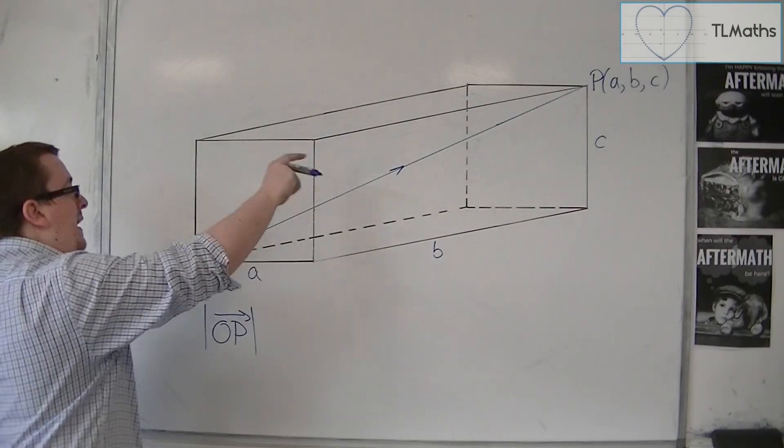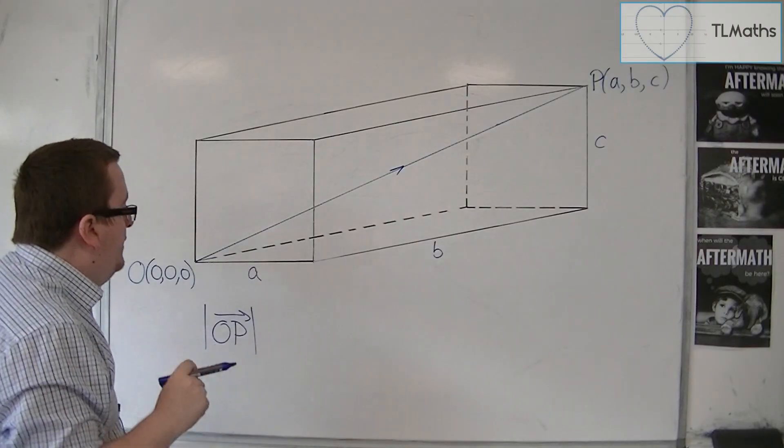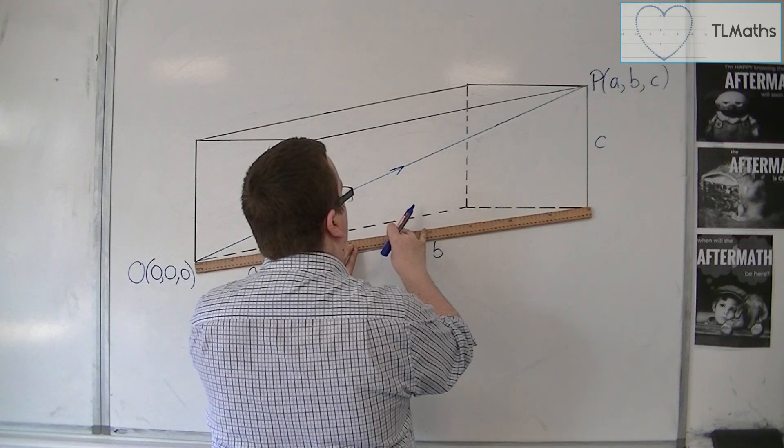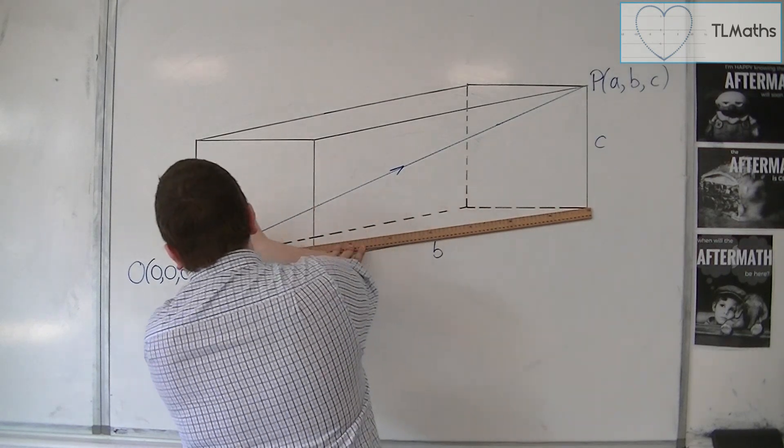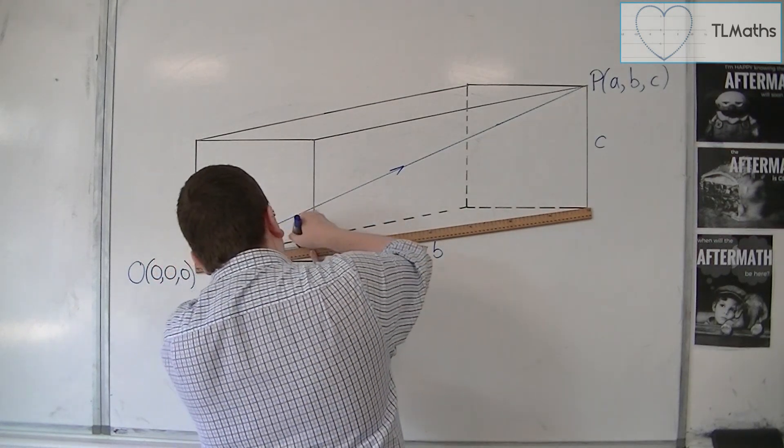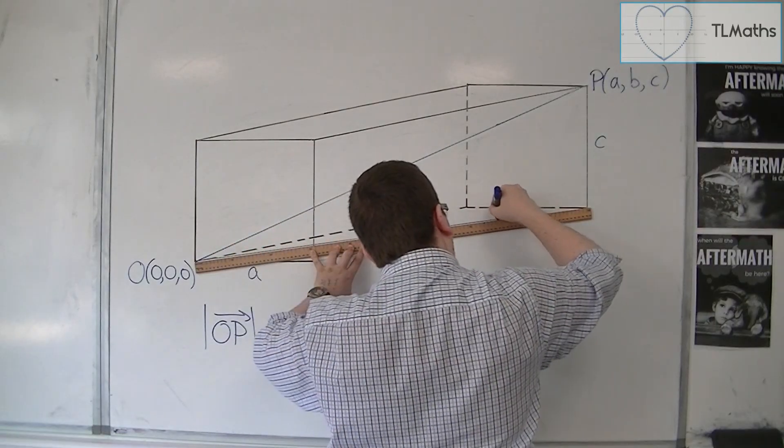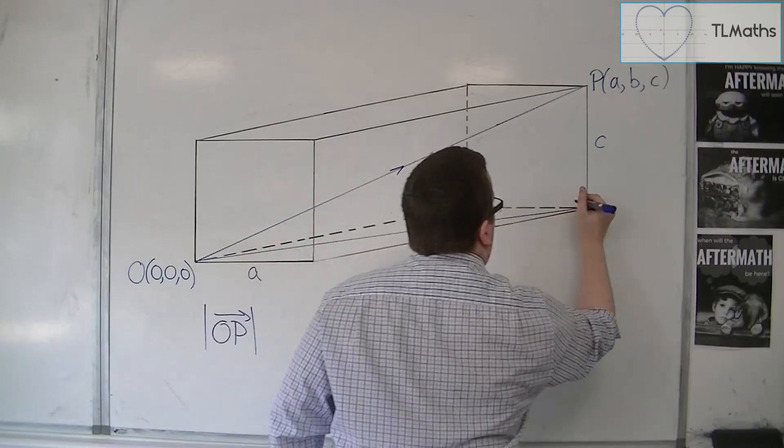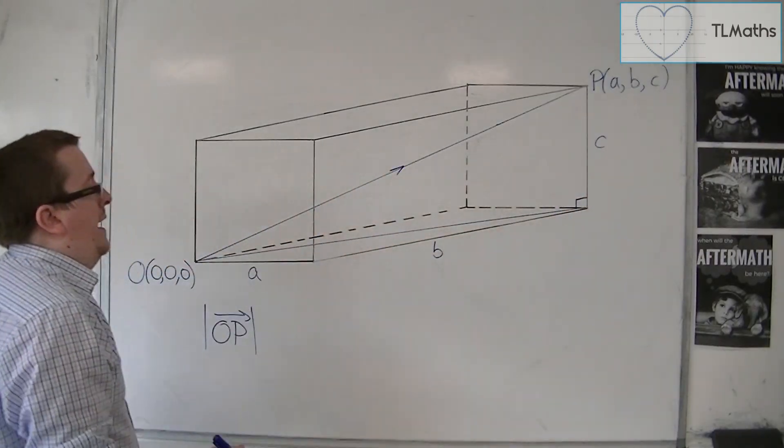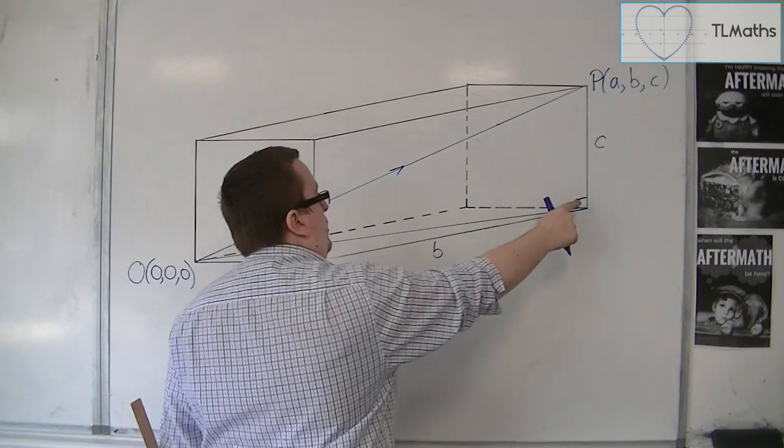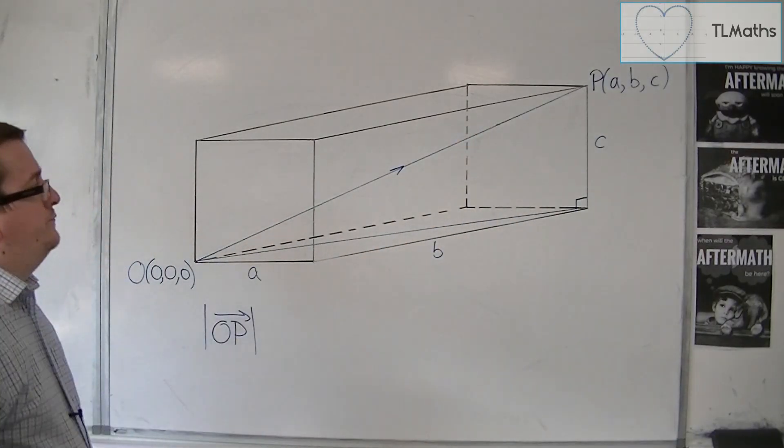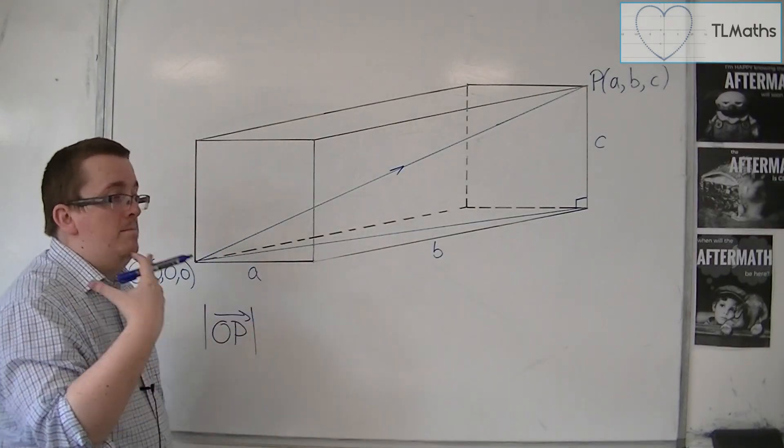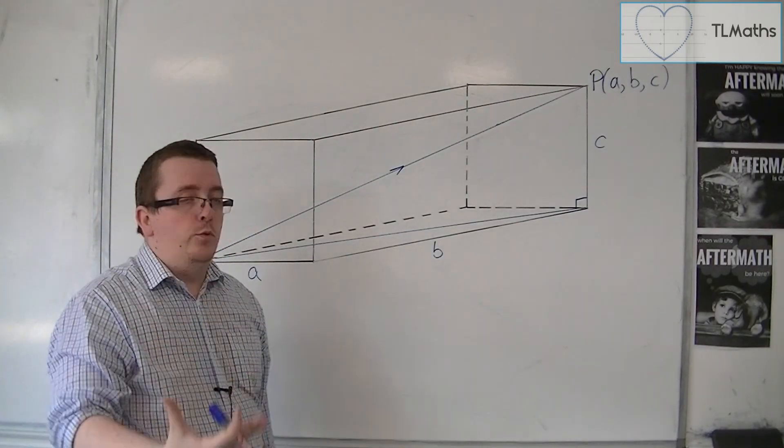If I want to find that length, what I can see is that if I join that point up with that corner there, I actually have a right-angled triangle that goes from corner to corner. So I have a right-angled triangle, and subsequently, I could work with Pythagoras.